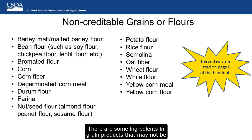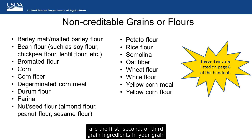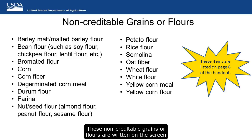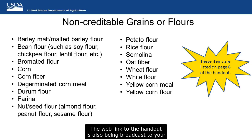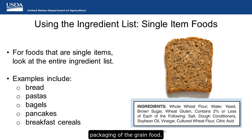There are some ingredients in grain products that may not be whole grain rich, bran, or germ — we call these non-creditable grains or flours. If any of these non-creditable grains or flours are the first, second, or third grain ingredients in your grain food, then you cannot use the rule of three to determine if this food is whole grain rich. These non-creditable grains or flours are listed on the screen and on page 6 of today's handout. The web link to the handout is also being broadcast to your chat box.